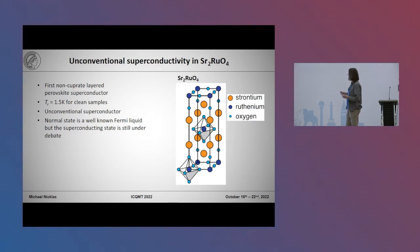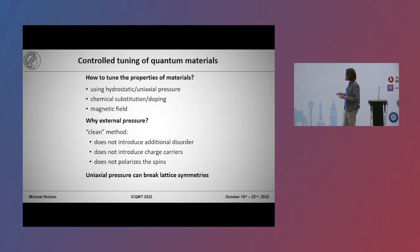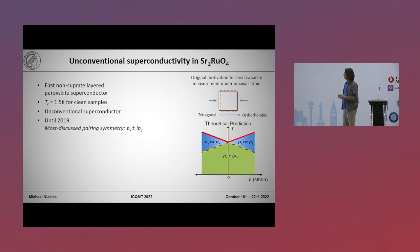So strontium ruthenate was the first non-cuprate layered perovskite superconductor. In very clean samples one finds a TC of 1.5 Kelvin and you need only a very small amount of disorder to destroy superconductivity in this material. It's an unconventional superconductor. It's important to know that in the normal state under ambient conditions it's a Fermi liquid. And basically until 2019 the most discussed pairing symmetry was P-wave and that is actually when we started our experiment.